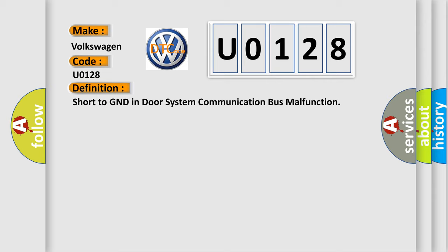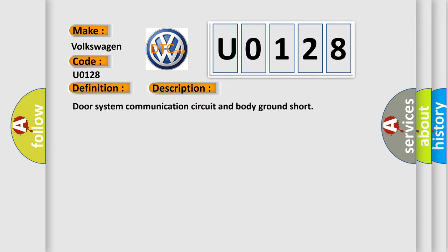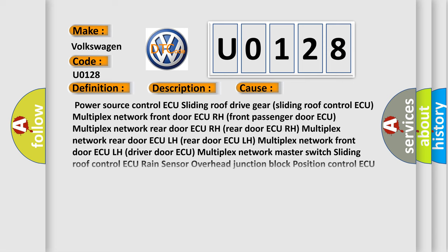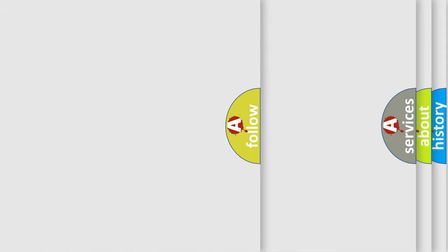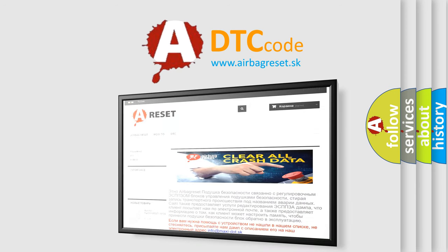This is a short description of this DTC code: Door system communication circuit and body ground short. This diagnostic error occurs most often in these cases: Power source control, sliding roof drive gear, multiplex network front door, front passenger door, multiplex network rear door, rear door, master switch, sliding roof control, rain sensor, overhead junction block, and switch for front seat wire harness. The Airbag Reset website aims to provide information in 52 languages. Thank you for your attention and stay tuned for the next video.